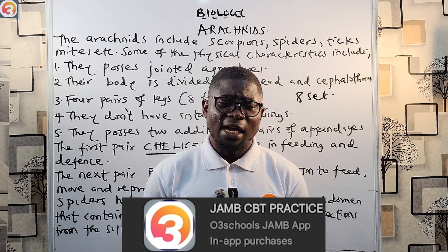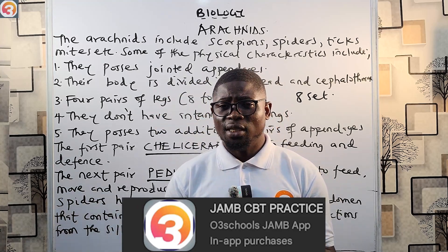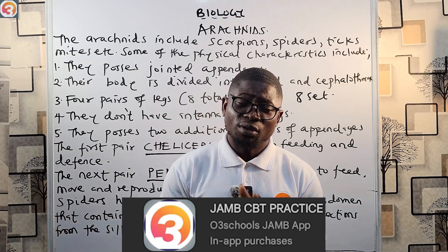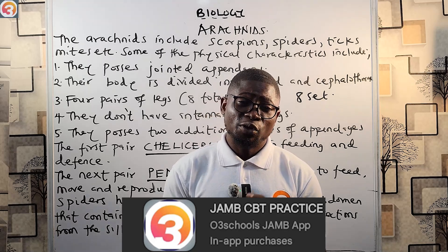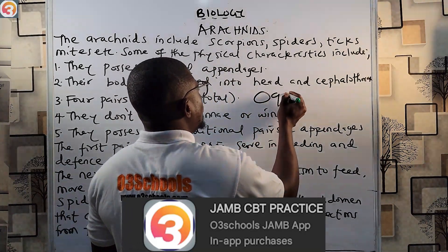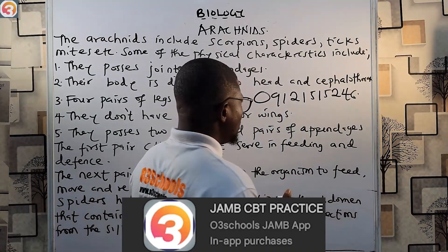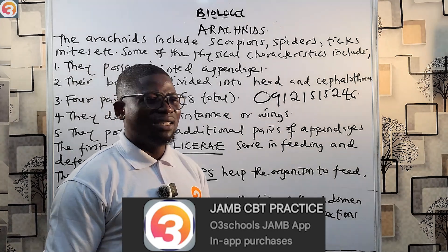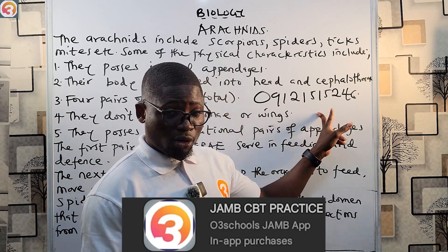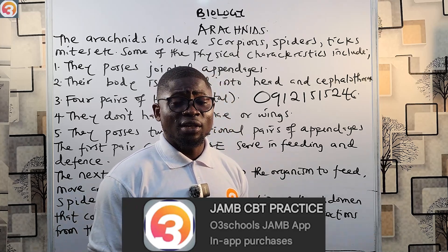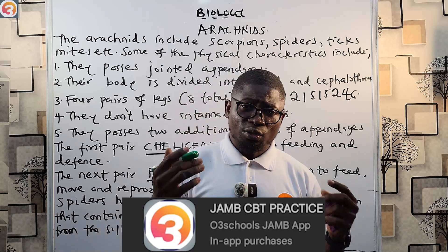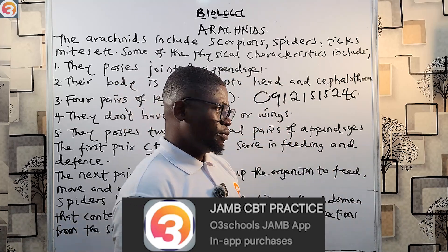To activate, download the app, click on 'Activate' at the top, then click 'Buy Activation Key.' You'll see three payment options: you can pay online with your ATM card, or transfer to the O3 Schools app account. If you transfer, send the receipt to this WhatsApp number: 09109121515. Once you pay you will be activated — just make sure you send the receipt so we know you've paid.